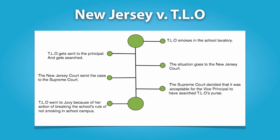In TLO, a principal searched the purse of a high school student when he suspected she had been smoking in a school laboratory, which was a violation of school policy. In searching the student's purse, he discovered a small amount of marijuana, a number of empty plastic bags, and a large number of $1 bills. The principal notified the student's parents and the police, and TLO subsequently confessed that she had been selling marijuana at the high school. The state subsequently brought delinquency charges against TLO in juvenile court, and TLO moved to suppress the evidence found in her purse, as well as her confession, which she argued was tainted by an unlawful, warrantless search.